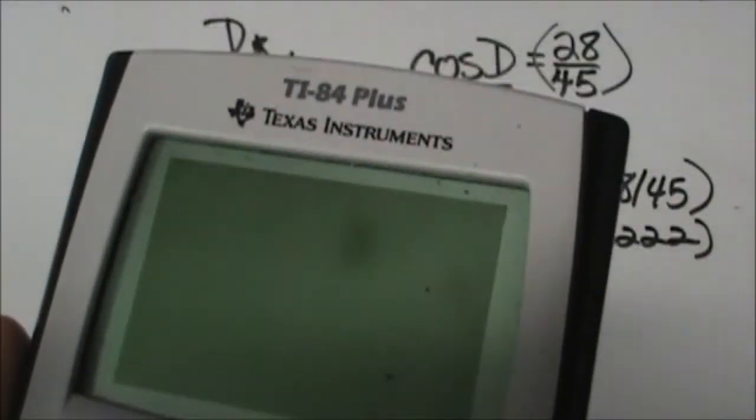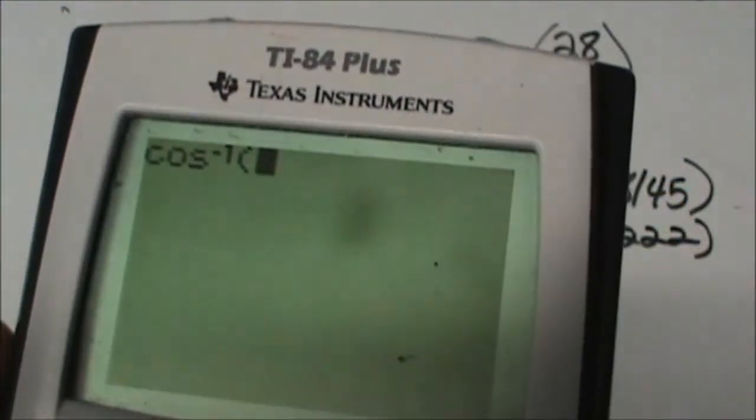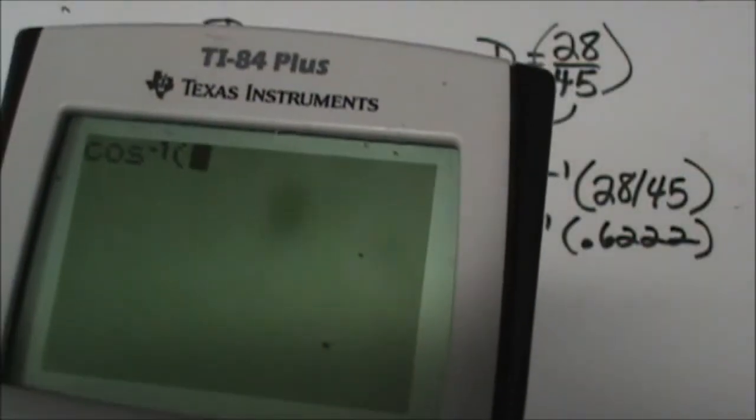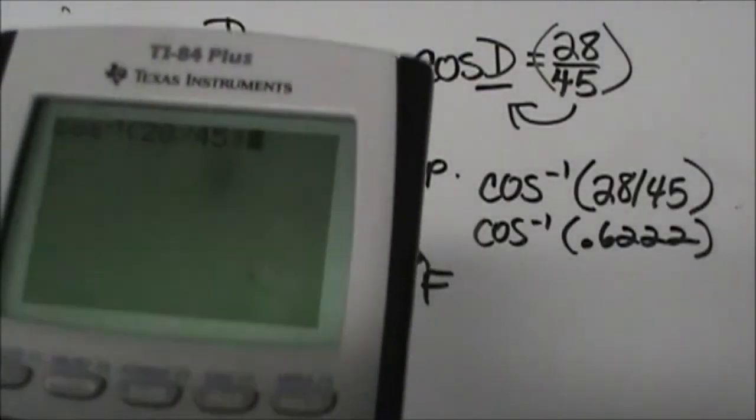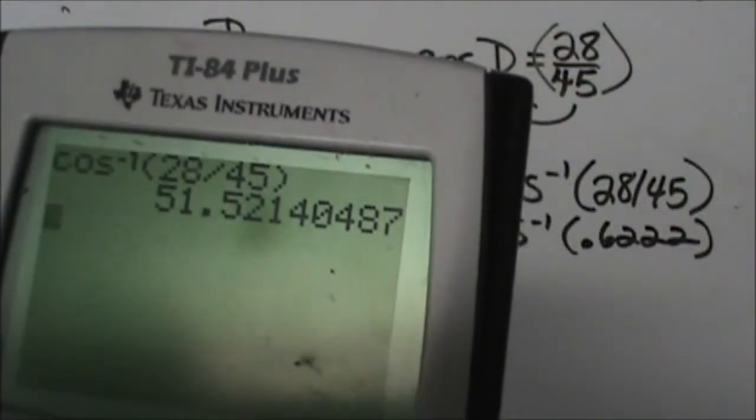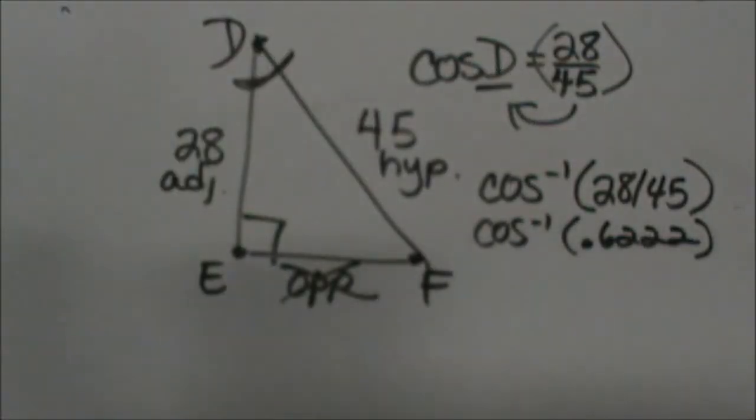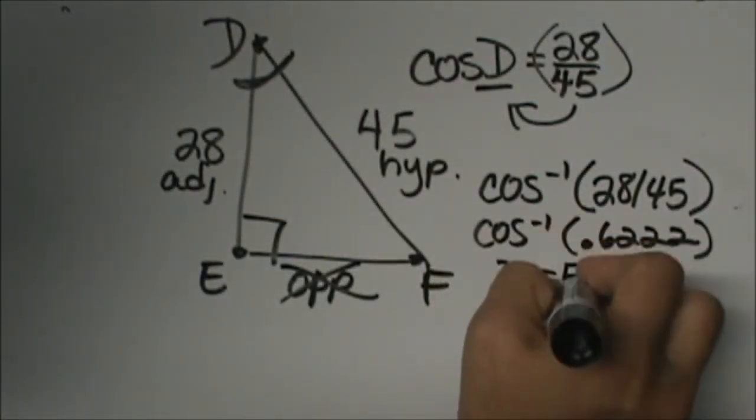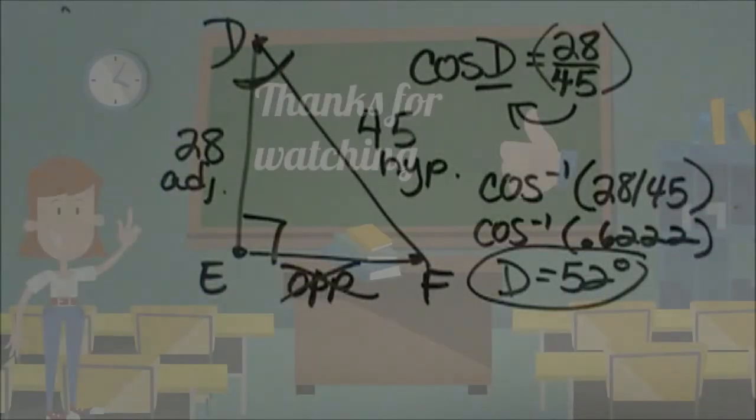You could also take the cosine inverse of 0.6222 repeating. It's up to you. I'm going to clear this and run through it. I'll take second function, second of my cosine to get that, and put my fraction in: 28 divided by 45. So there it is, and that means my angle is 51.5, or I would round that up to 52 degrees. So D is 52 degrees. That's how you figure out the angle measure at D.